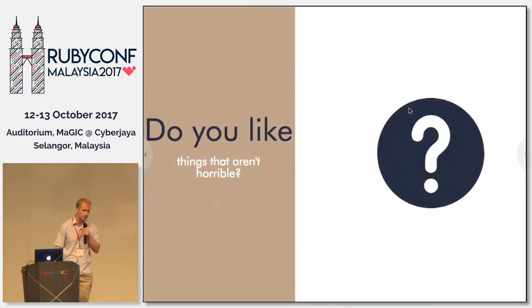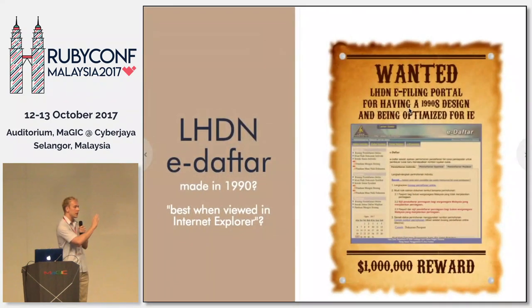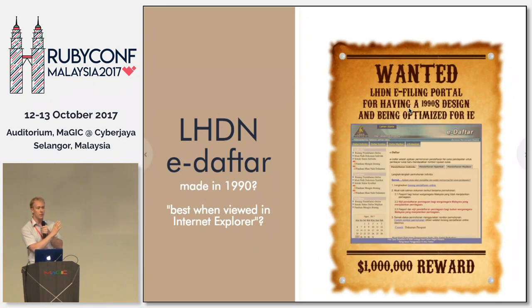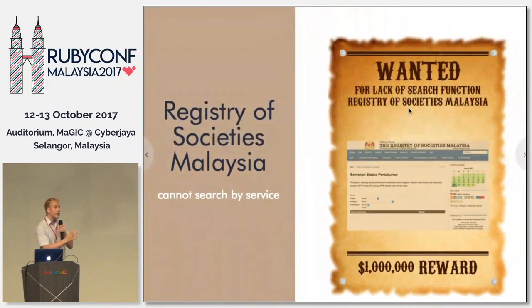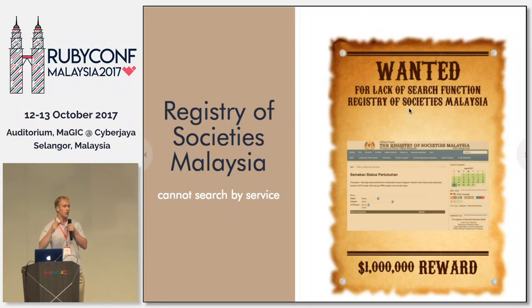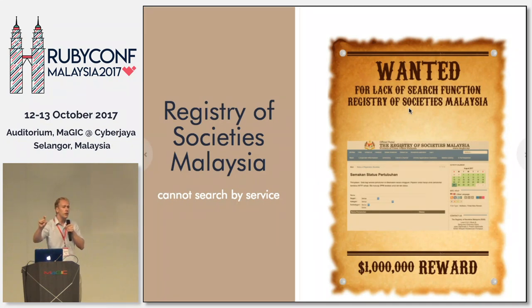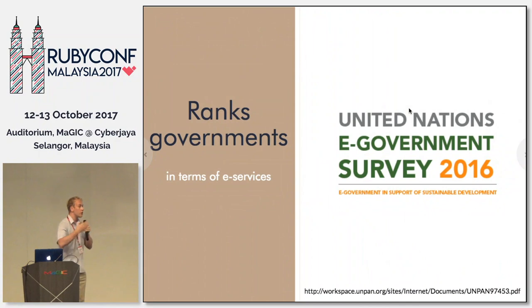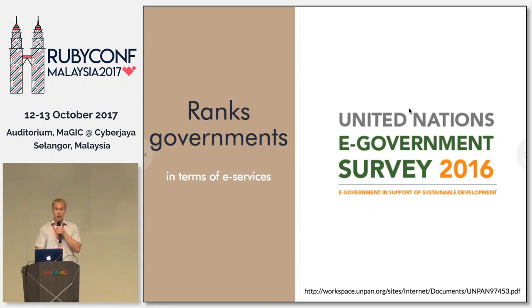Do you like things that are not horrible? Some government websites need a lot of work — they're optimized for Internet Explorer or maybe Netscape Navigator. This next one isn't so bad; it can show me non-profit organizations in Malaysia, which is a good concept. But the problem is I cannot search by the services I want — I have to imagine the name of an organization that might provide that service. Not surprisingly, when the UN looks at e-government services across countries, Malaysia is not highly ranked. There's a lot of opportunity to improve this situation.